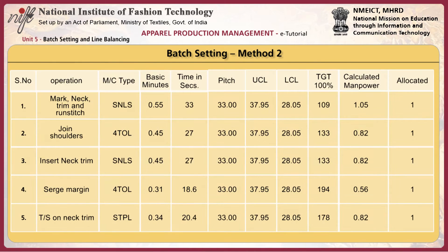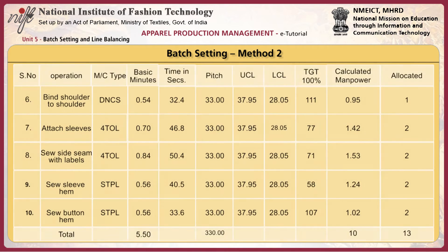Batch setting by method 2: an operation bulletin is prepared which includes one column for calculated machine requirement and another for actual machine requirement. The calculated machine requirement mostly comes as a fraction. You must allocate the correct number of machines to achieve the hourly output target. Where work content is higher than the pitch time, more than one machine is planned for the same operation. Whether to add one more machine or share work with another operation depends on the work content, decided by upper and lower control limits.